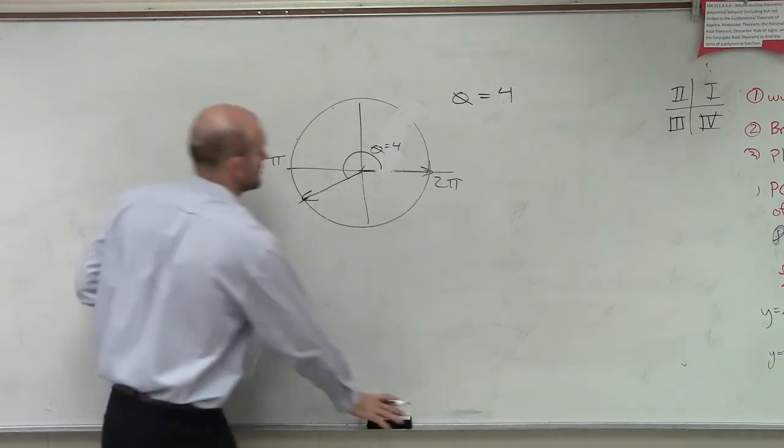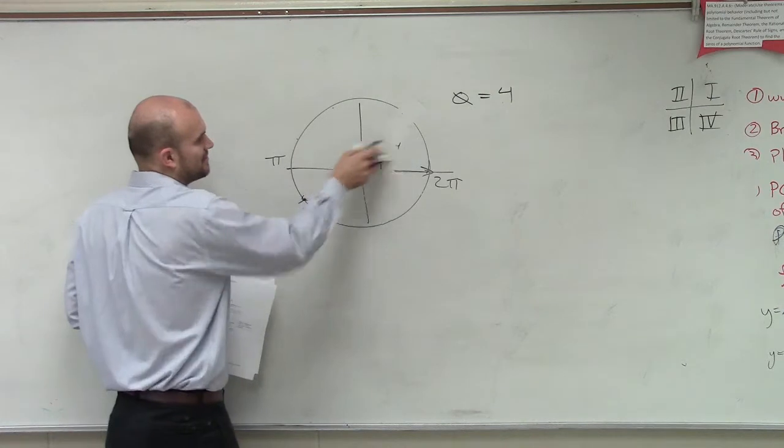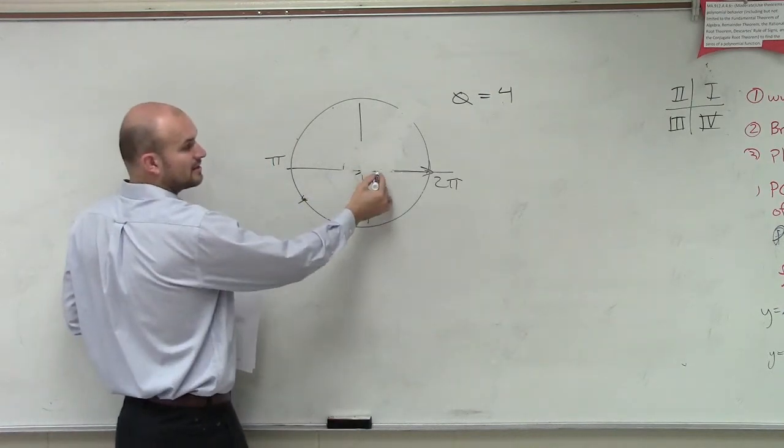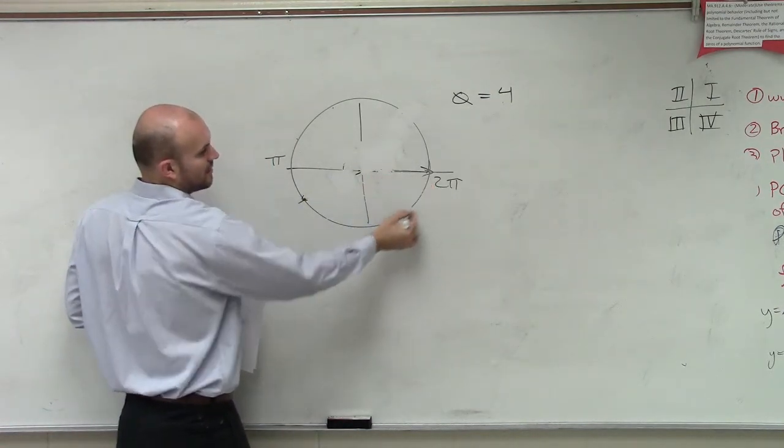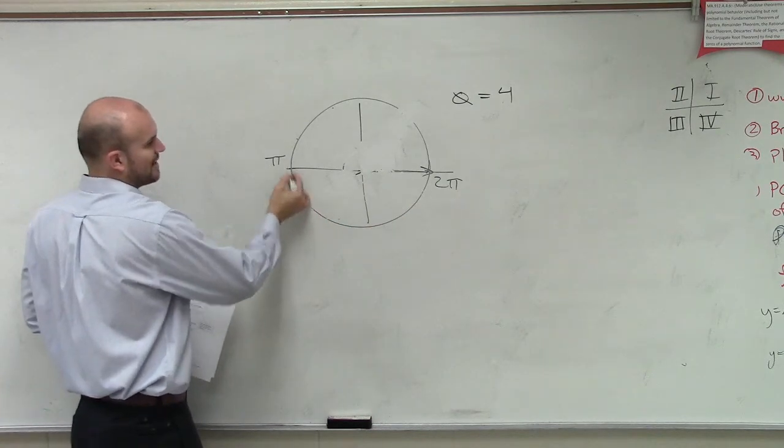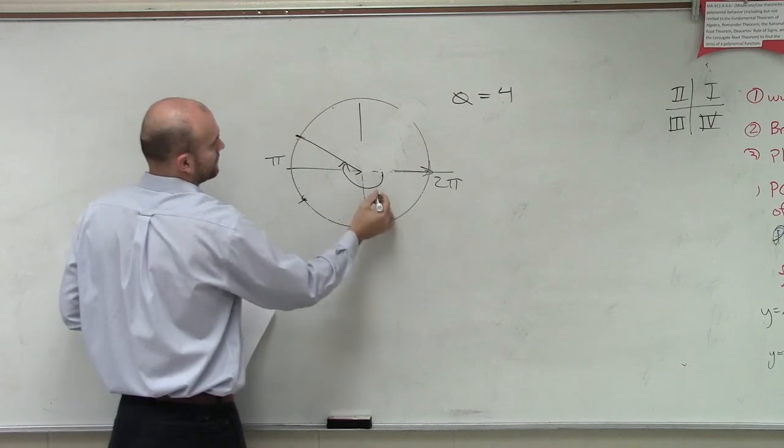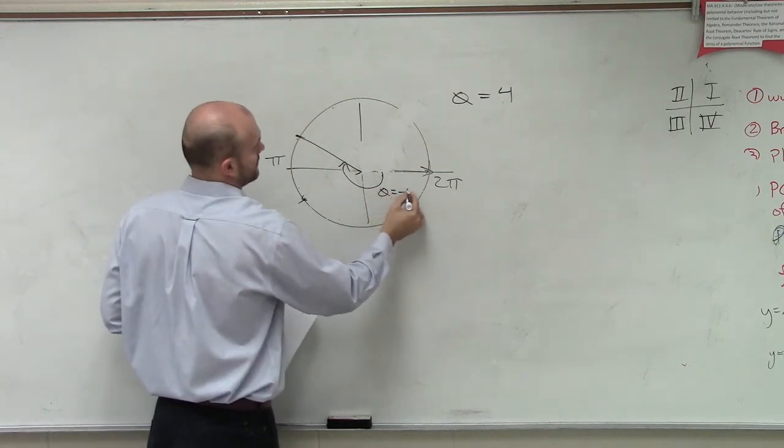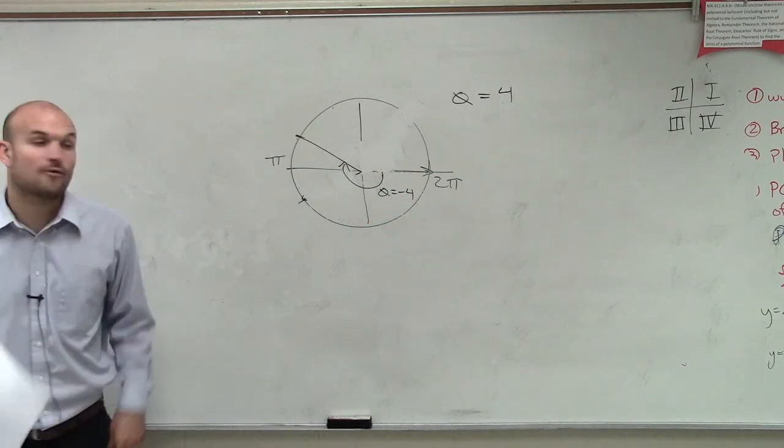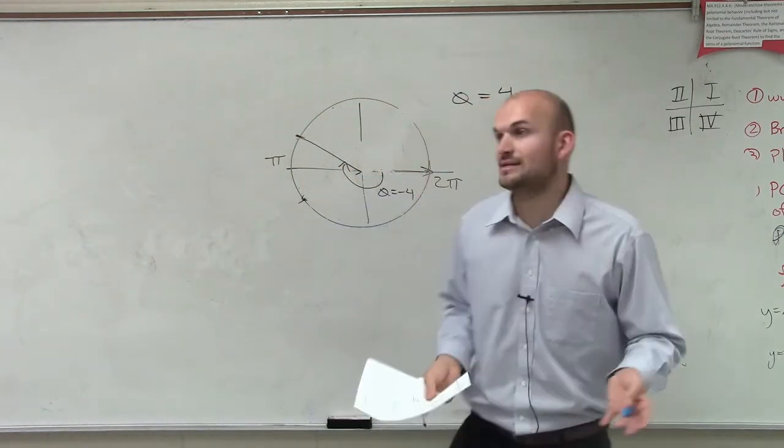Because remember, you're going in the negative direction. But would it start in the same way? Yep. You missed what I went through. So if you start here, that's about 1 radian, 2 radians, 3 radians, 4 radians.